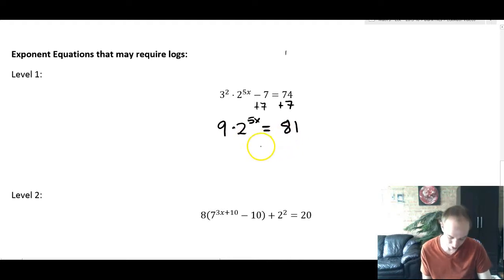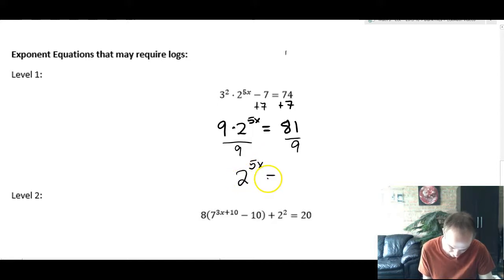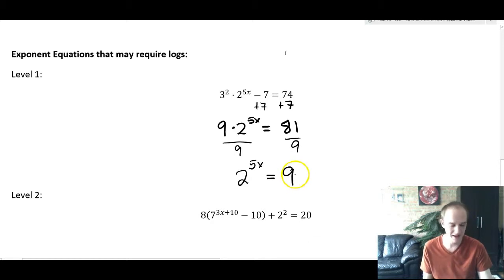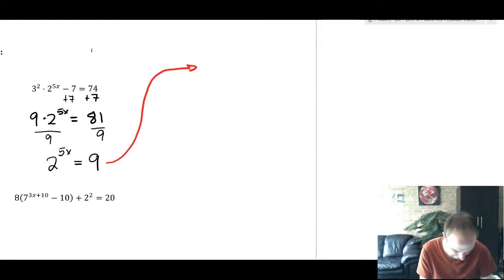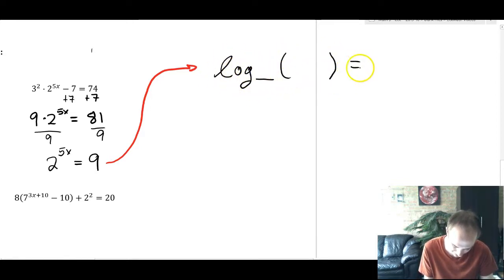Now I'm starting to see the base coming into play. So let's divide by 9. 9 is just a number. We don't have to match a base when we have numbers and numbers. So we're going to get 2^(5x) = 9. But now we have a problem. We could write 9 as 3^2, but 2 is not 3. Those are different things, which makes our life a little more difficult.